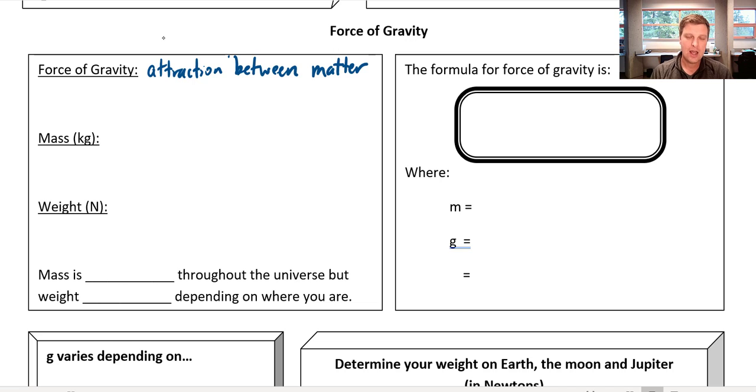So electromagnetic force can work both ways but gravity is always, always, always an attraction. Gravity is always trying to pull things together and interestingly enough gravity attracts everything in the universe. So everything with mass and energy in the universe is being pulled together by this big far-reaching force.